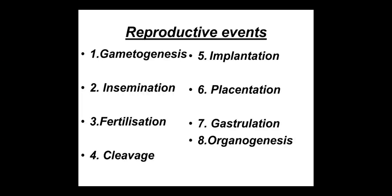The last event of the reproductive system is childbirth, which is technically called parturition — the expulsion of the fetus from the mother's womb. So there are nine reproductive events in total: gametogenesis, insemination, fertilization, cleavage, implantation, placentation, gastrulation, organogenesis, and parturition.